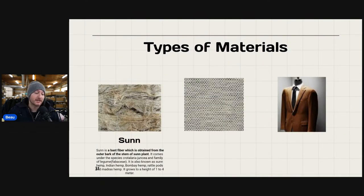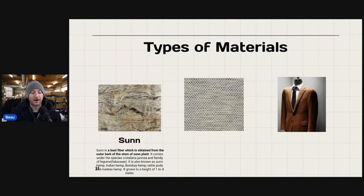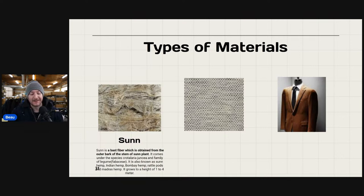Sun is a bast fiber obtained from the outer bark of the stem of the sunn plant, from the species Crotalaria juncea in the legume family. It's also known as sunn hemp, Indian hemp, Bombay hemp, rattle pods, and Madras hemp, and grows to a height of one to four meters. I wonder how many people listing on eBay are checking that as an item specific — probably not too many. If you find it, do a lot of research to know how to price it.